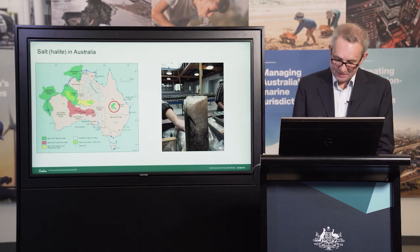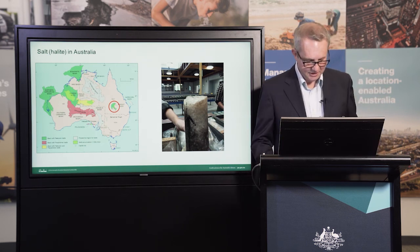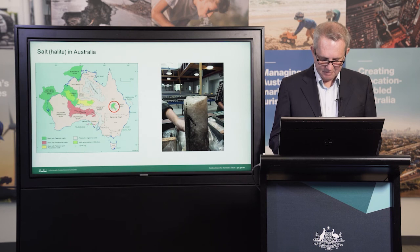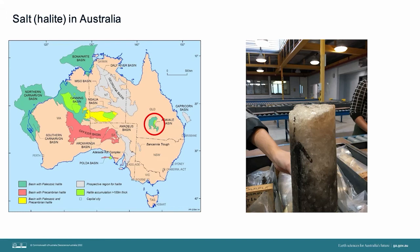Australia has many sedimentary basins that contain salt, but thick salt accumulations, particularly halite, have been intersected by wells in only a few basins, namely the Canning, the Amadeus, the Ada Vale and the Polder Basins. The photo is an example of the type of salt we're looking for — found within the core archives of the Queensland Government's core store, it's a core sample of the Boree salt from the Ada Vale Basin, and in places is over half a kilometre thick. As you can see in the map, the Boree salt is the only known thick salt accumulation in eastern Australia, and is therefore a very strategic resource.